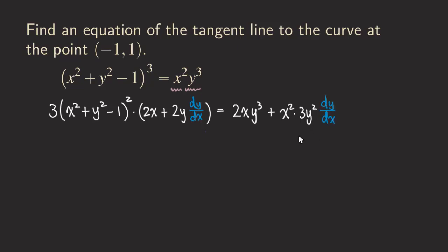Now we have the differentiated equation. Usually the next step is to solve for dy/dx, but that would be a tedious calculation. To avoid that, since we're really just finding an equation of a tangent line, we don't need to find dy/dx in general. We can start plugging in x = -1 and y = 1 into the equation and then solve for dy/dx from there.